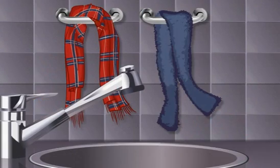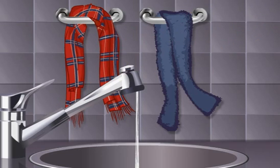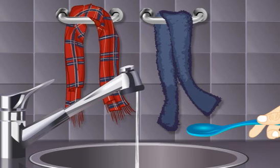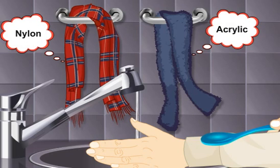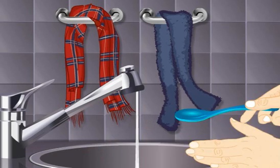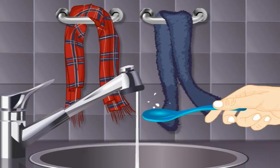Let's perform a small activity to test the presence of these subatomic particles. Turn on the tap so that there is a thin trickle of water coming out. Now take a plastic spoon and rub it against your clothes — this works really well if you are wearing clothes made of nylon or acrylic. Bring the rubbed side of the spoon near the water. You will observe that the trickle of water moves towards the spoon.